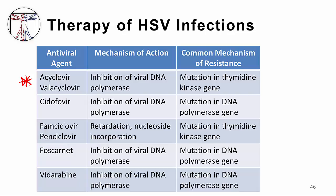This table summarizes the name of the antiviral agents, the mechanism of action — which is principally the inhibition of viral DNA polymerase — and if resistance develops, the usual mechanism for that resistance. I'll leave it to you to look at this table at your leisure.